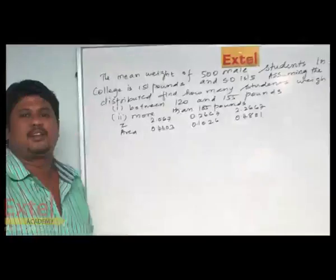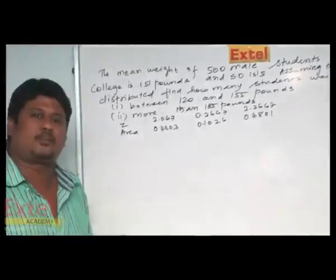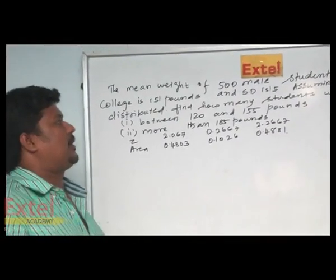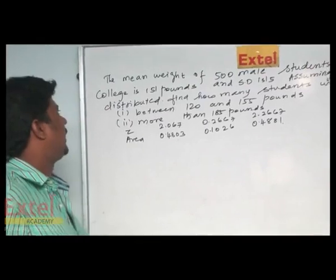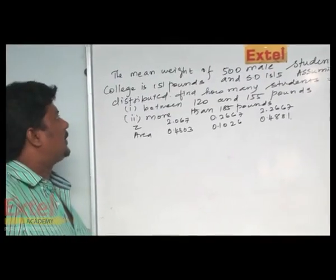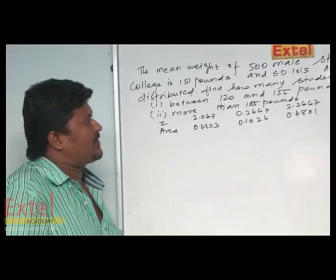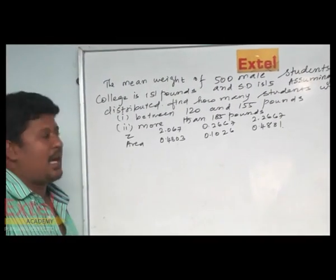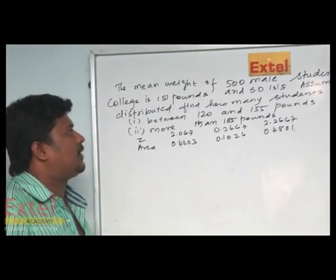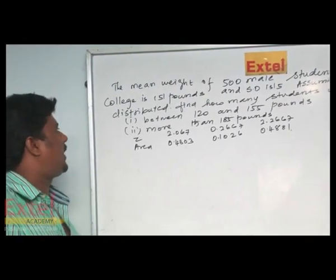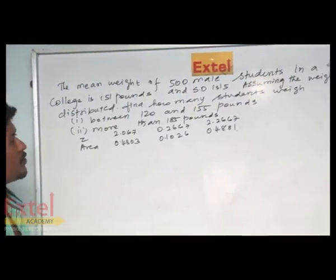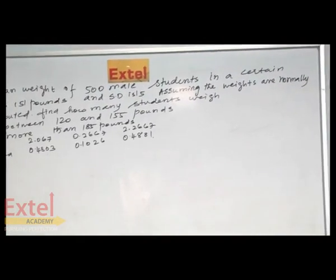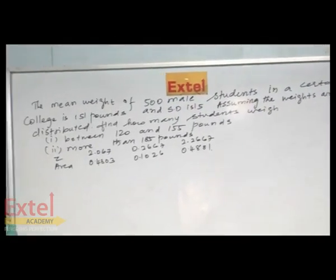The next problem is also from the normal distribution. On reading the question we can see that it is coming from normal distribution. The mean weight of 500 male students in a certain college is 151 pounds and standard deviation is 15. Assuming that the weights are normally distributed, find how many students weigh between 120 and 155 pounds, and more than 185 pounds.